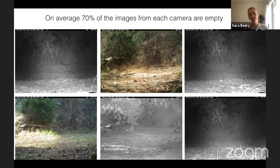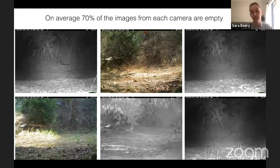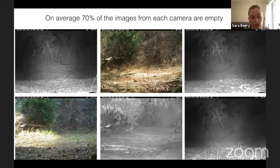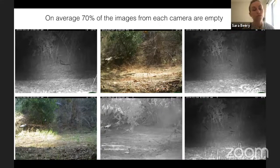Around 70% of the images from each camera are empty, so you have just this massive imbalance in terms of empty versus not. You can almost think of it like a whole-image version of the classic detection problem where you have a lot more examples of the background class than the foreground, and people do things like focal loss to try to handle that.